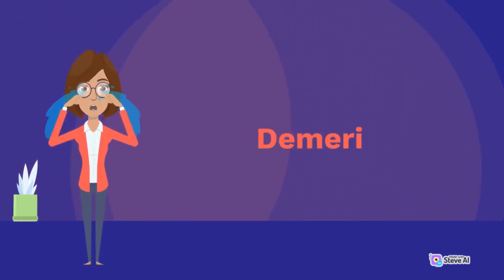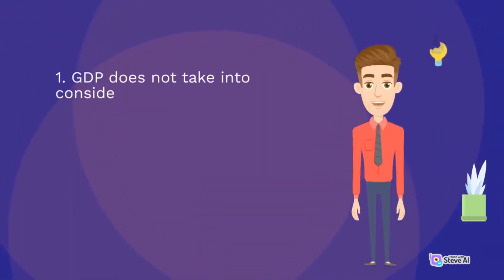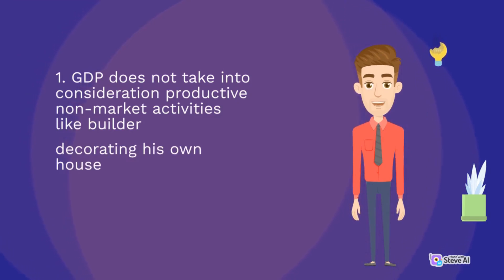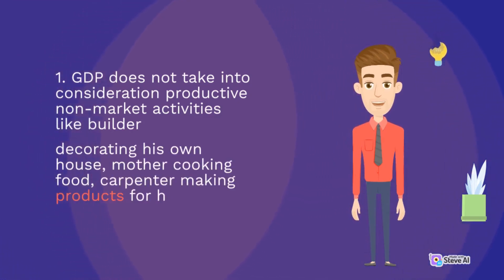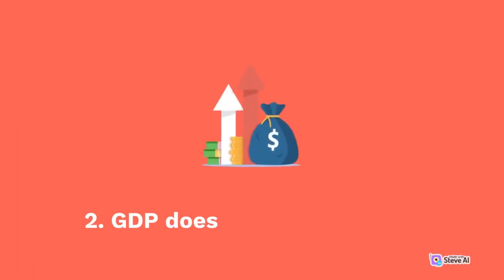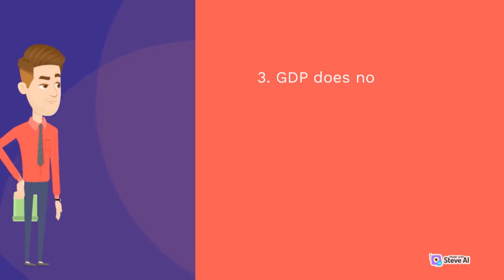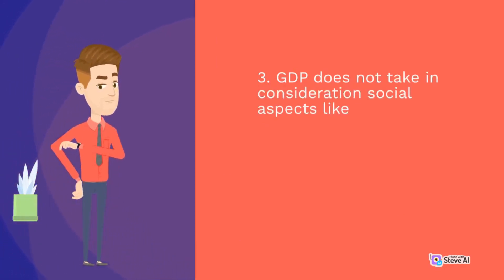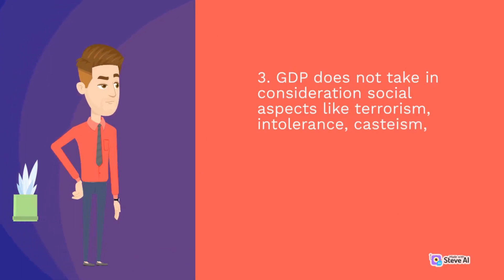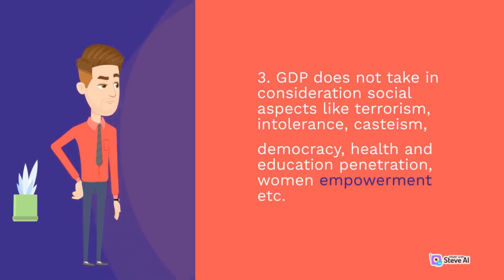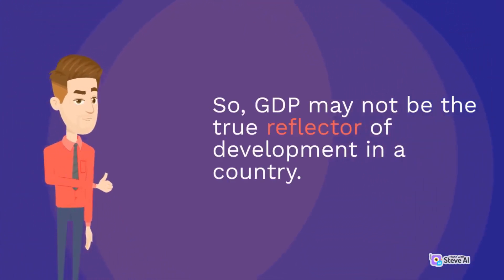Demerits: 1. GDP does not take into consideration productive non-market activities like a builder decorating his own house, a mother cooking food, or a carpenter making products for himself. 2. GDP does not show income inequality in a nation. 3. GDP does not take into consideration social aspects like terrorism, intolerance, casteism, democracy, health and education penetration, women empowerment, etc. So GDP may not be the true reflector of development in a country.